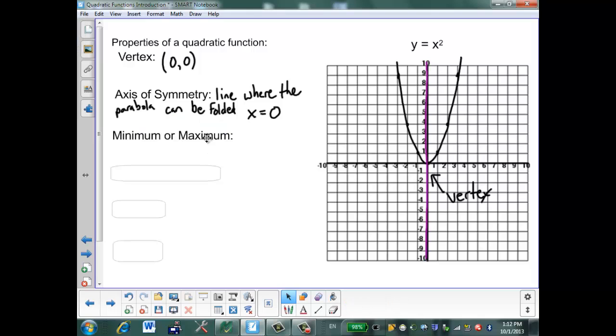The next thing we can look at is whether our graph has a minimum or a maximum. My graph goes down to a line and then goes back up. So for this graph, I have a minimum value. And my minimum is at 0, 0. I would have a maximum if my graph was going in the other direction, if it was going up to a value and then coming back down.